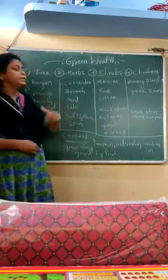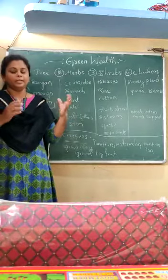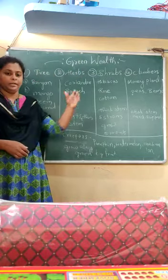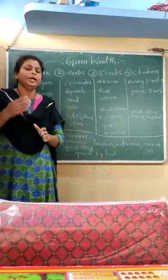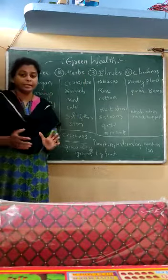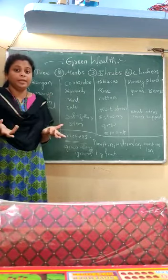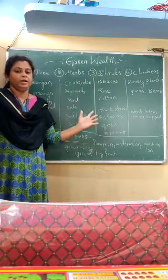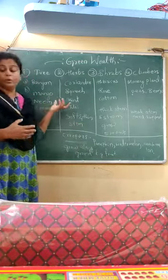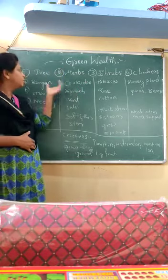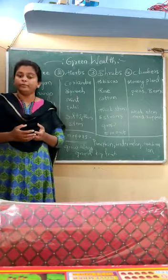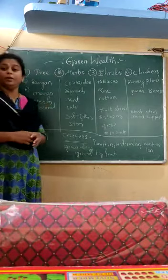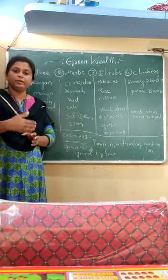Trees have a very thick and strong stem and can grow to the highest point of their height. For example, the banyan tree is very big, very broad, and its roots and stem are very thick and strong. These trees live for years together and are very helpful in giving oxygen. Examples include banyan tree, mango tree, neem tree, and coconut tree.